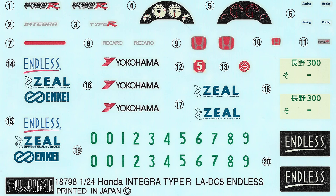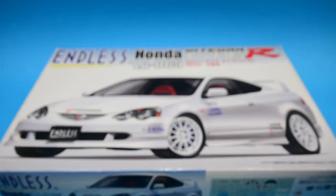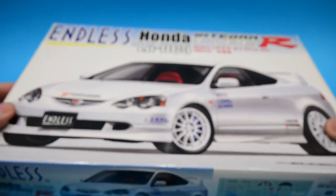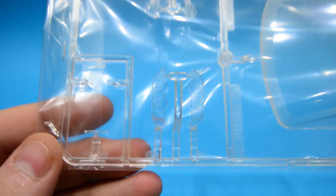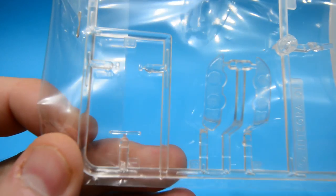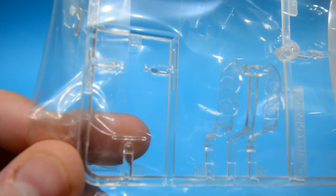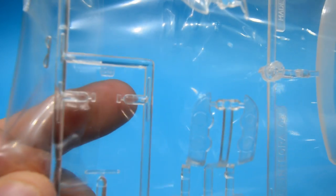Lots of sponsorship decals: Zeal, Enki, Endless, and Yokohama, plus a third brake light. But let's take a look at what is in this kit. How gorgeous is that car? So close to buying the DC5 a few years ago. Now, clear parts: windscreen all one piece, rear lights, what looks like a third brake light even though there is a decal for it, side repeaters, and headlights.